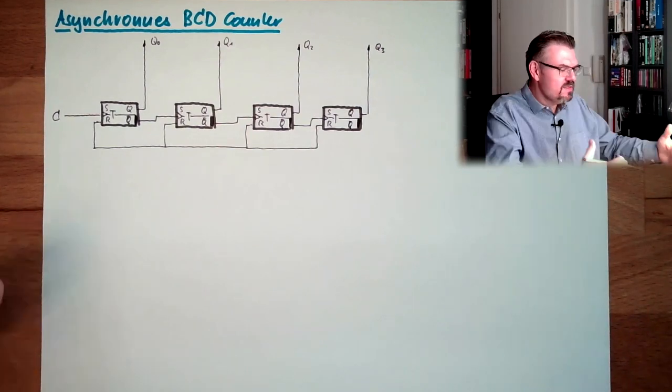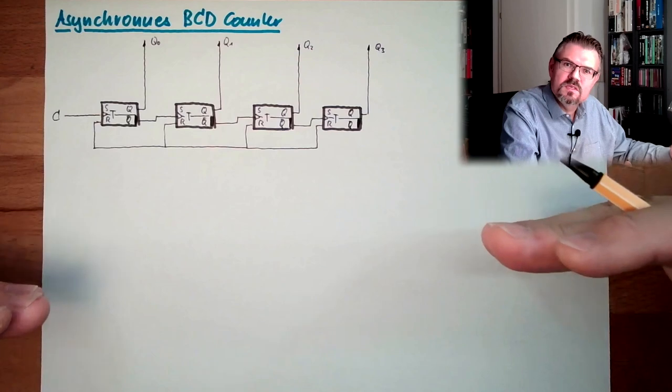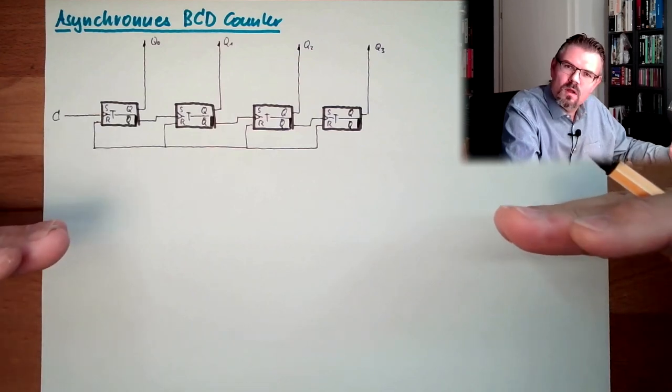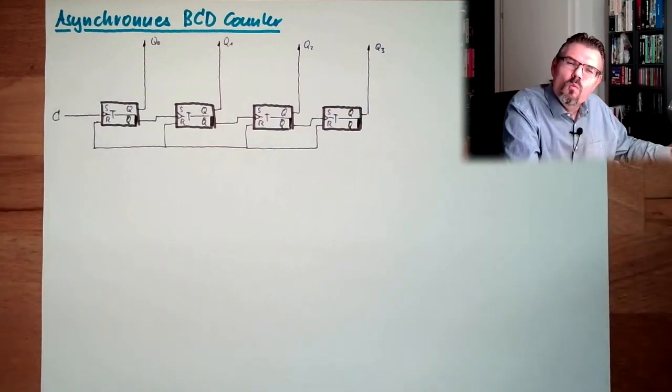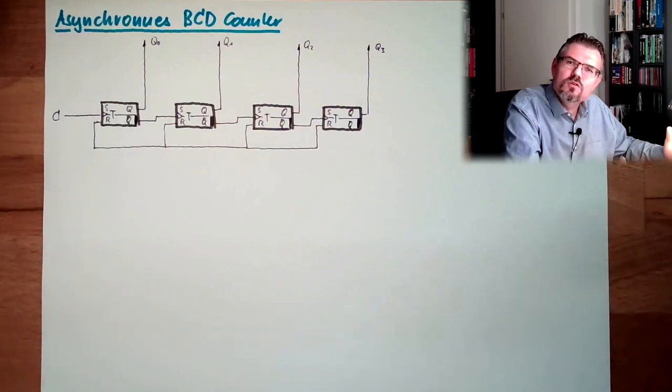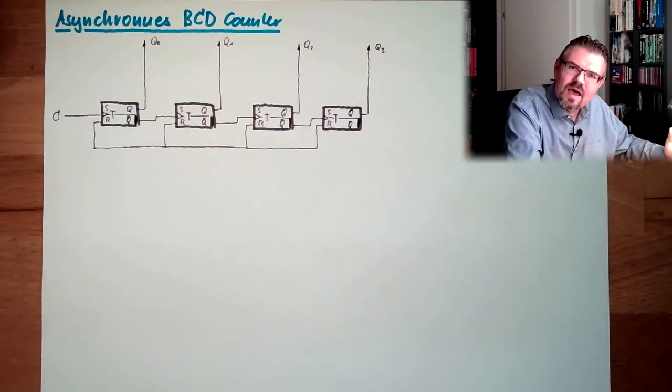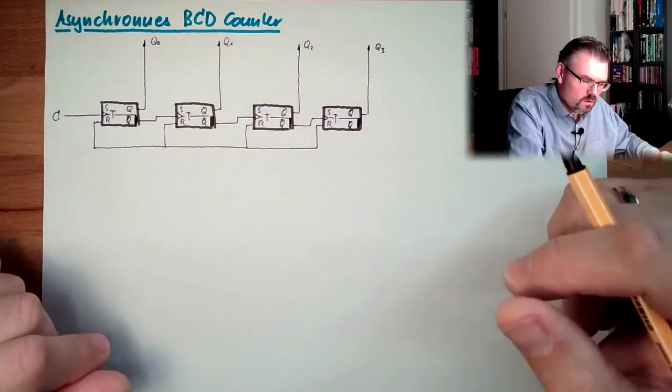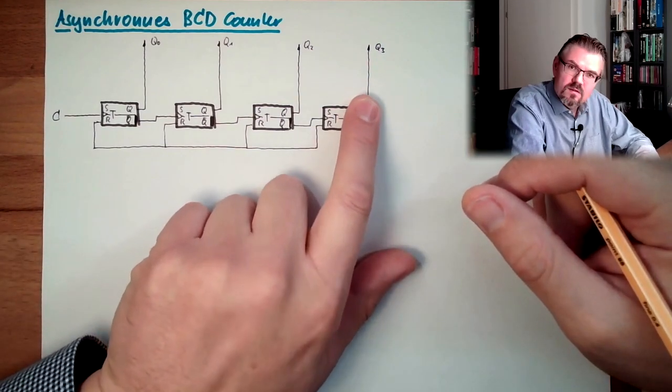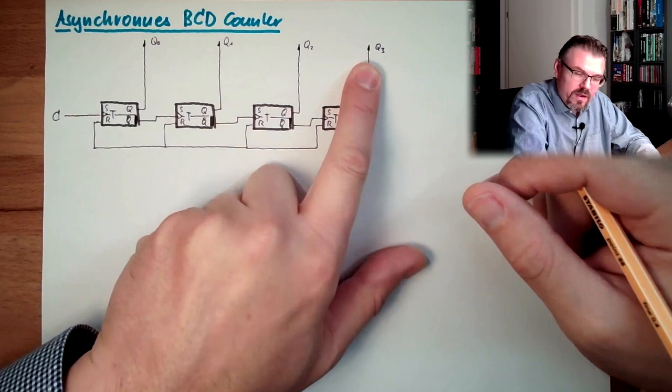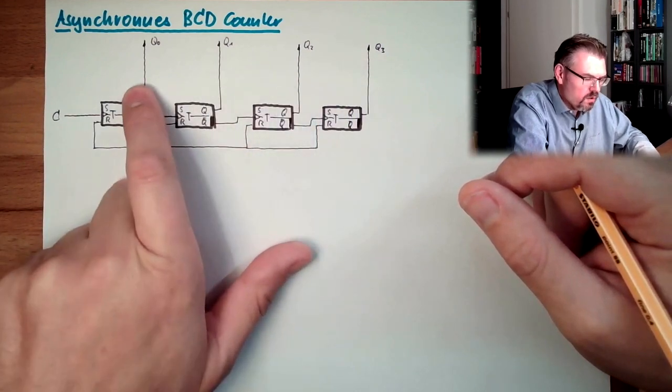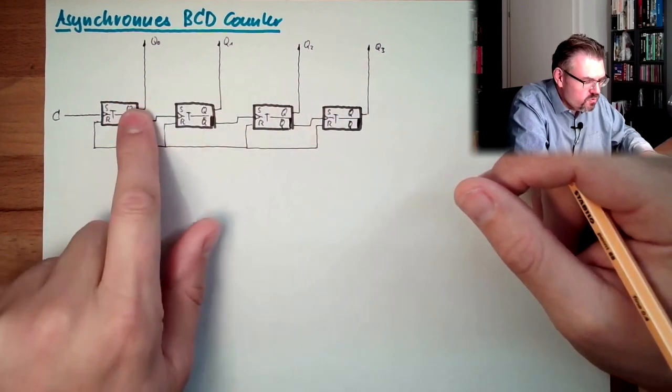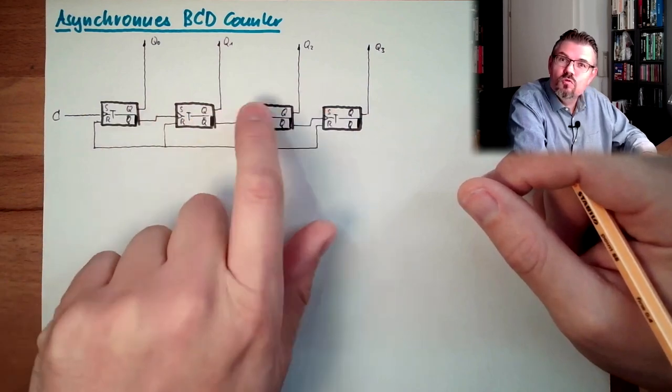Now, this thing counted from zero to one, one, one, one. However, what is nine? Nine should be the last digit. Nine is one, zero, zero, one. So it's eight, this is the value eight. This is value four, two, one. Eight and one, those two must be here, and those two must not be here.